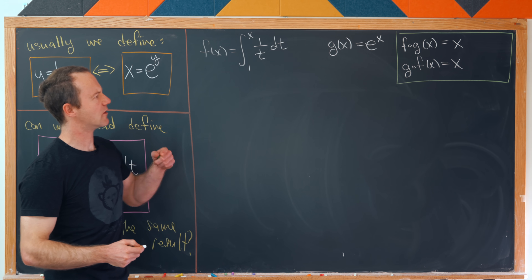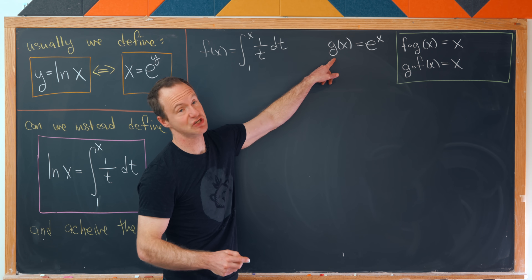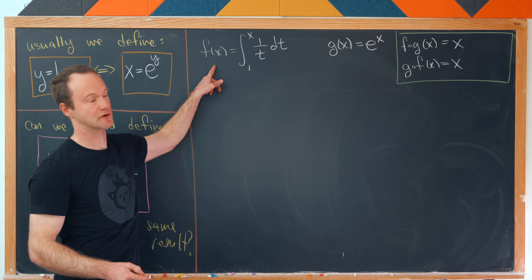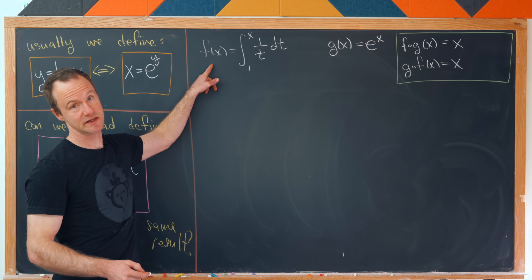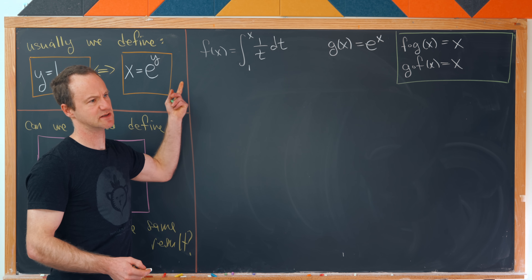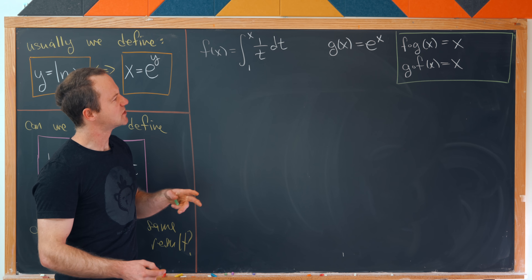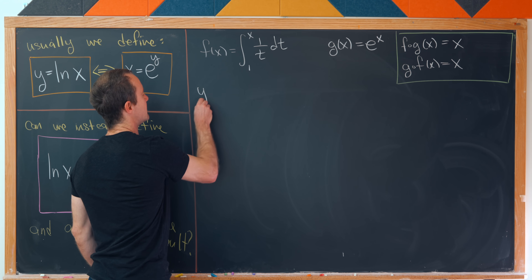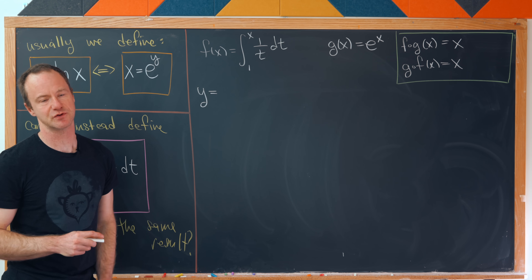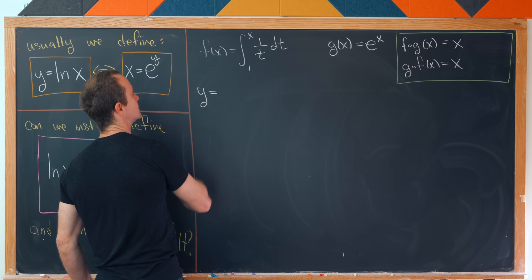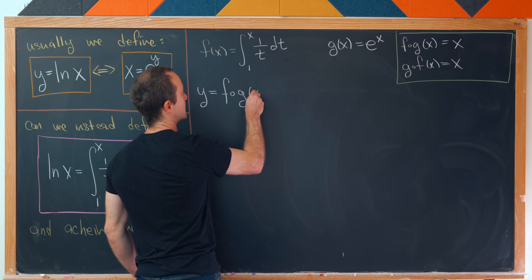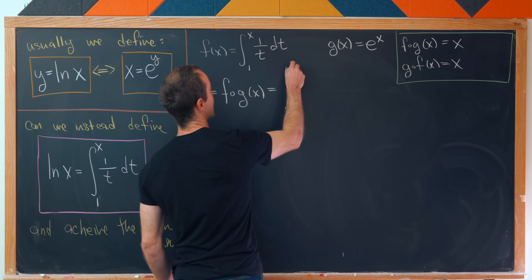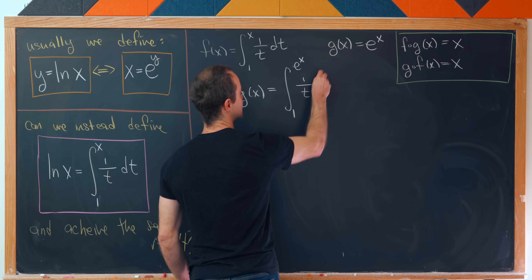I should point out that the domain of g is all real numbers while the range is just the positive real numbers, and we have the opposite situation for f: the domain is positive real numbers and the range is all real numbers. Let's start with f composed with g. We'll introduce a variable y to make the derivatives look nicer. So y = f∘g(x), which is the integral from 1 up to g(x) = e^x of 1/t dt.